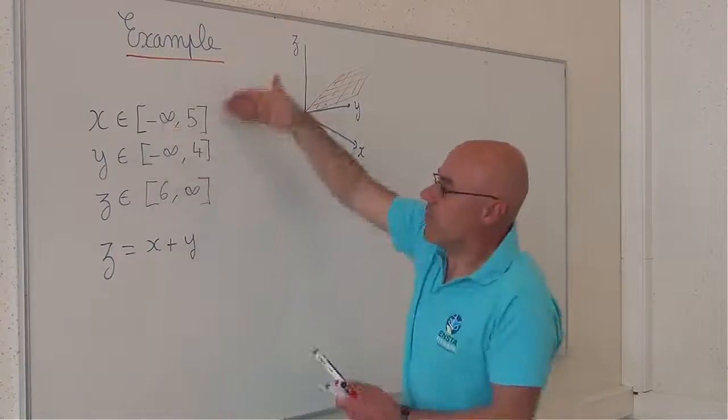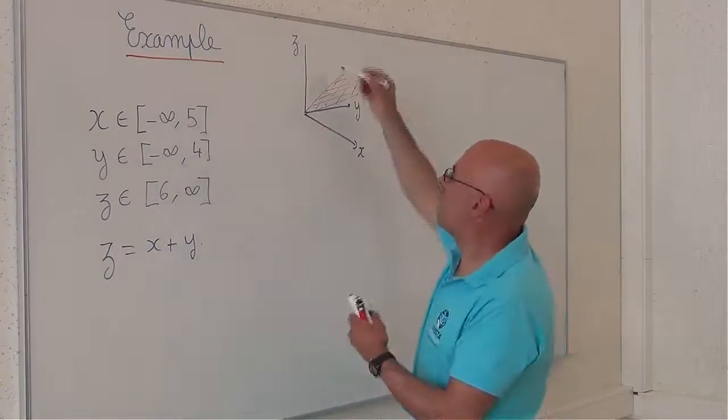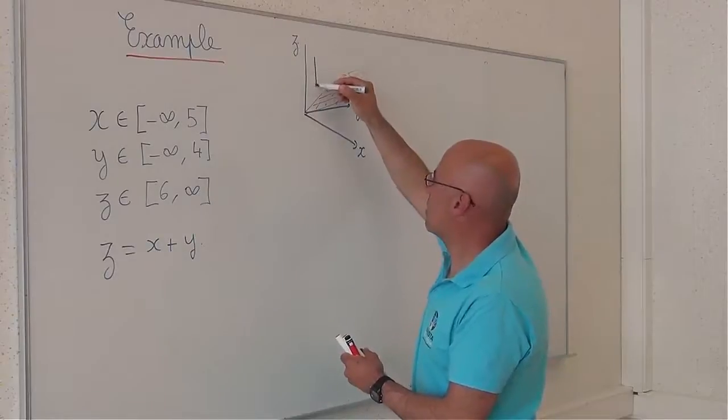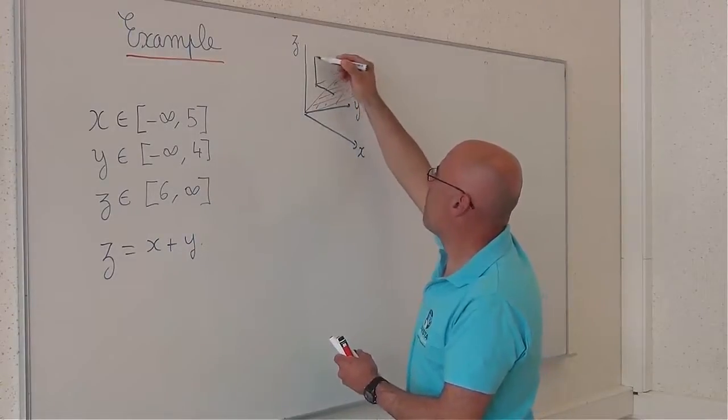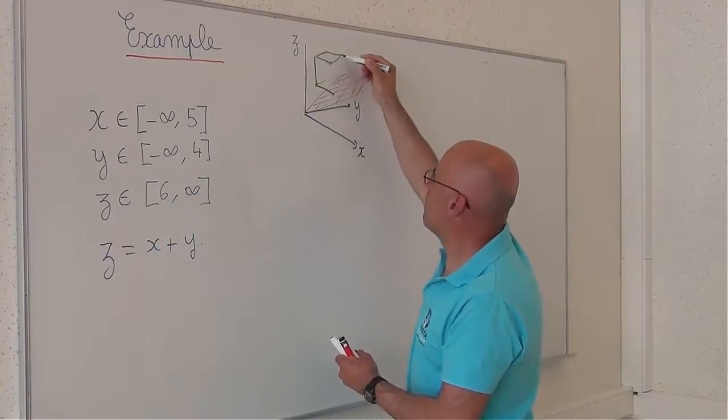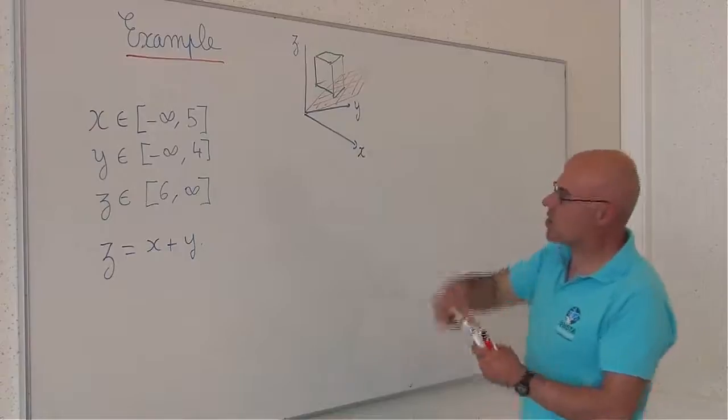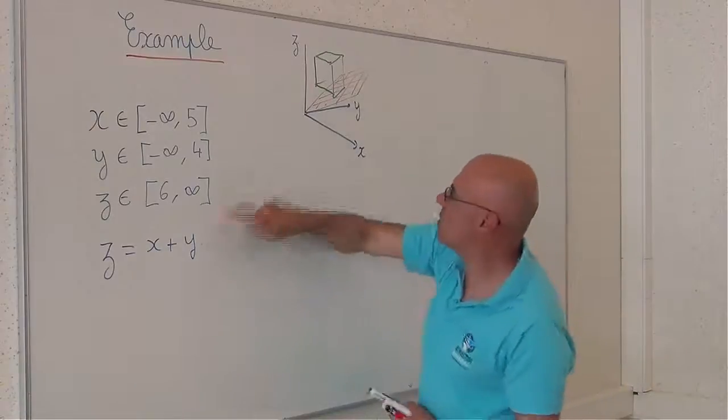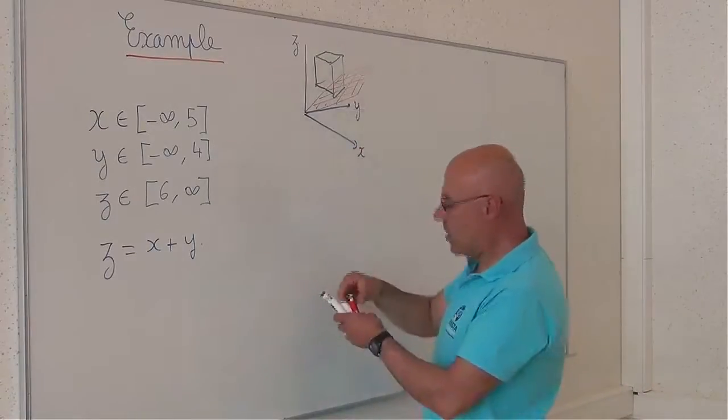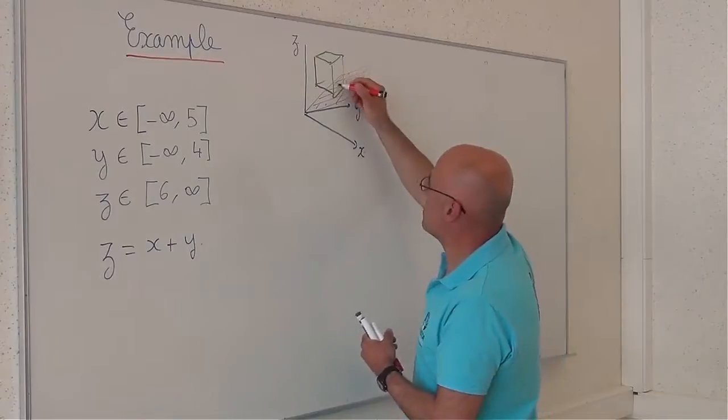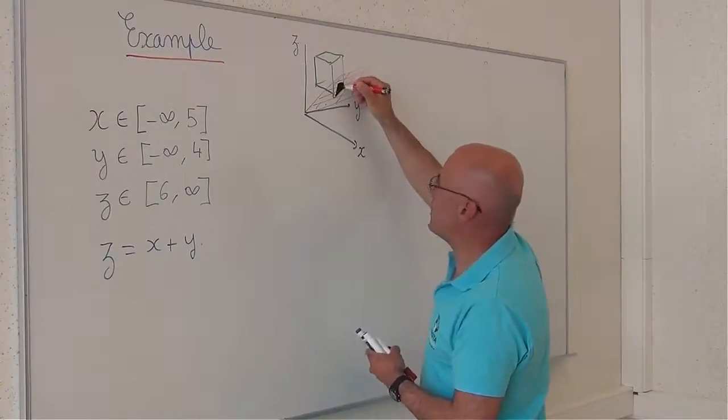If I have a box, for instance, this box goes to infinity, but let me consider another box represented here. The intersection between this equation and this box will correspond here, for instance, to this area.